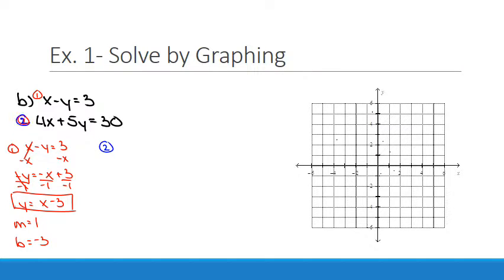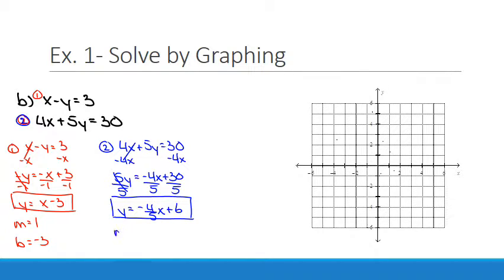So I guess I could color code that a bit better too. 4x plus 5y equals 30. Subtract 4x. Subtract 4x. 5y equals negative 4x plus 30. Divide by 5. Divide by 5. Divide by 5. y equals negative 4 over 5x plus 6.